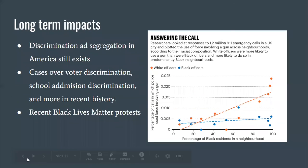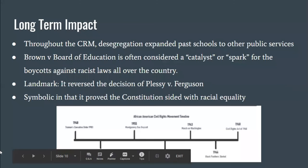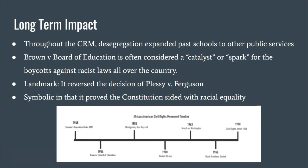Throughout the civil rights movement, desegregation expanded past schools to restaurants, jobs, public services, and more. Brown v. Board of Education is often considered a catalyst or spark for the boycotts that happened after it against racist laws all over the country, and it increased the fight against segregation in legal battles, protests, and more, ultimately leading to the Civil Rights Act of 1964. It was a landmark case because it reversed the decision of Plessy v. Ferguson, which had ruled that separate was equal, and it was symbolic in proving that the Constitution sided with racial equality.